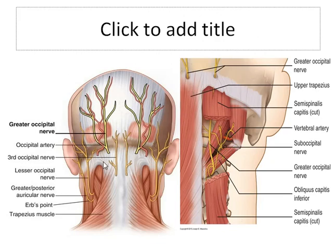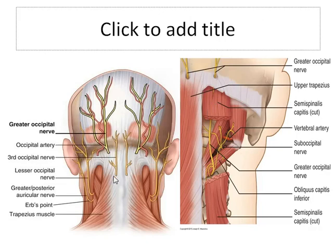Let us discuss the contents of the superficial fascia. Superficial fascia contains the greater occipital nerve. The greater occipital nerve arises from the dorsal ramus of C2. It runs upward and medially, pierces the trapezius muscle and semispinalis capitis muscle, and reaches the vertex. It innervates the semispinalis capitis muscle and also the scalp.